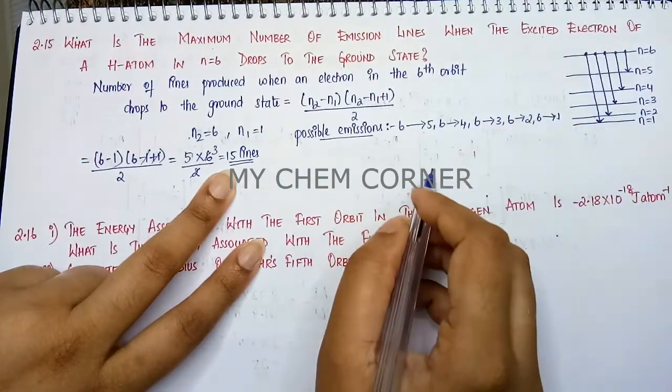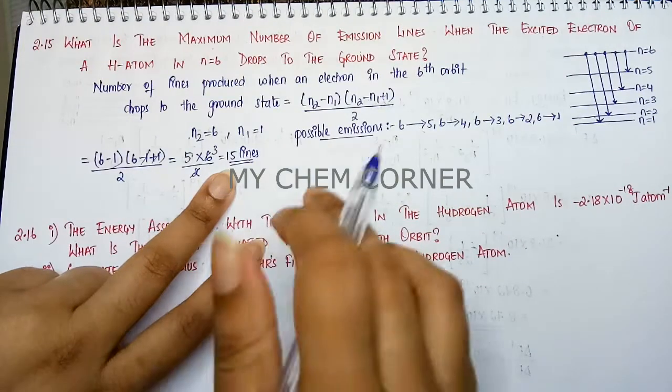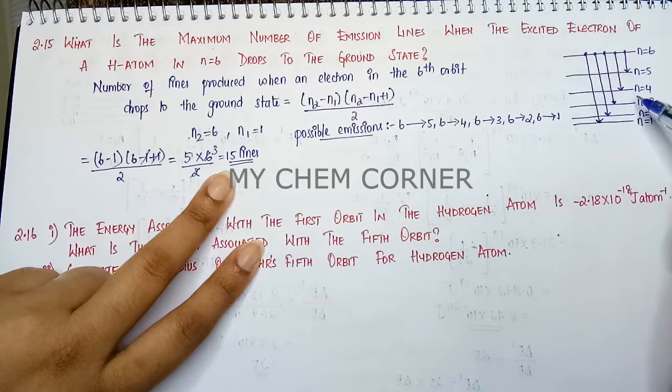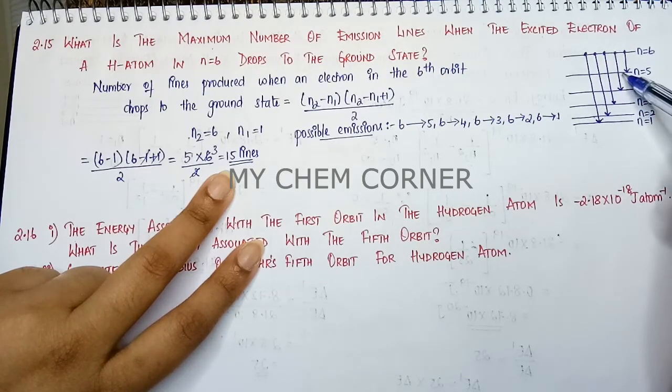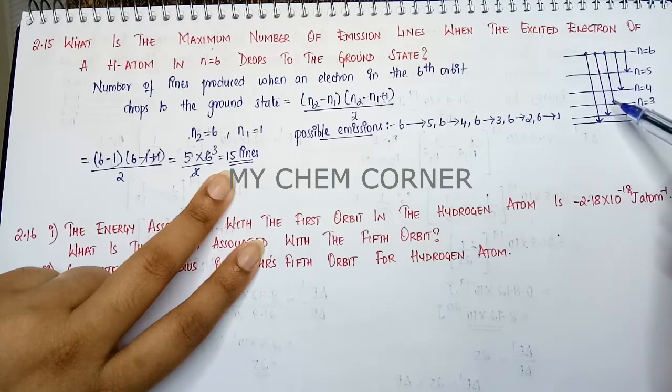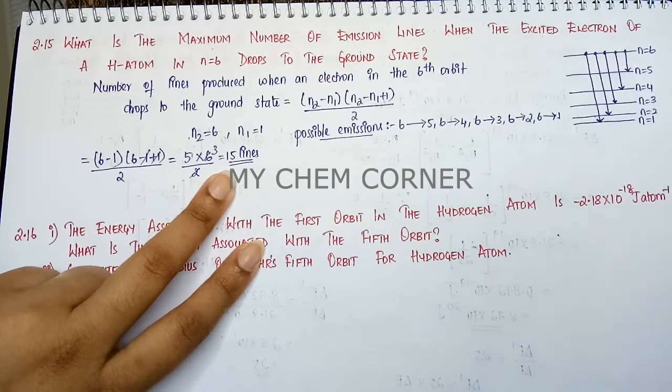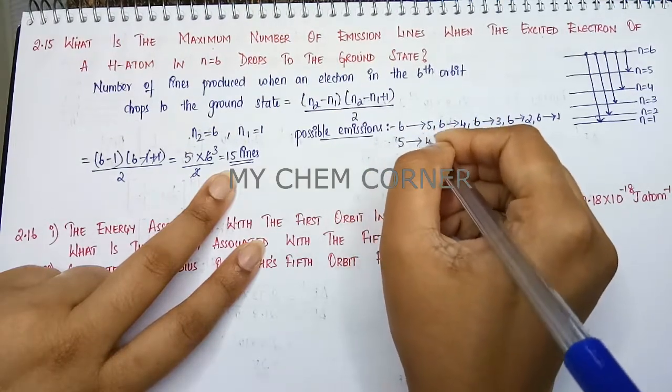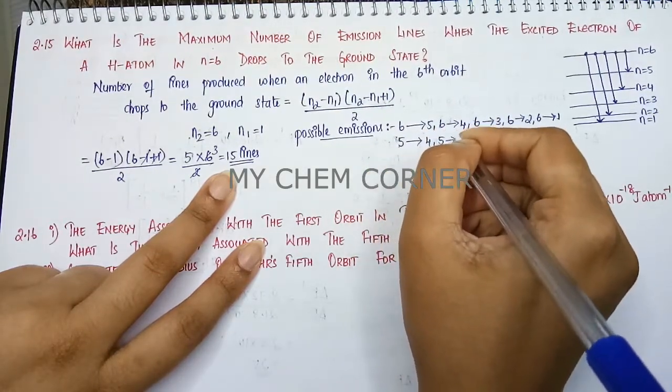Now we can also say that when it is falling from 6 to 5, from here it can further fall down. So we can have 5 to 4, 5 to 3, 5 to 2, 5 to 1. So here we can also have 5 to 4, 5 to 3, 5 to 2, and 5 to 1.